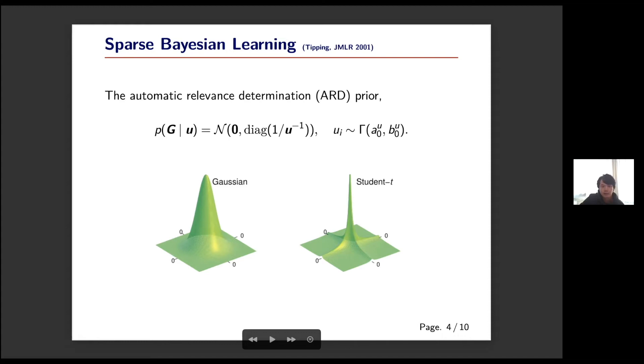In this paper we propose to use sparse Bayesian learning techniques to automatically infer the tensor ring ranks. We use the popular ARD prior, which is a hierarchical structure of distributions. It assumes that the vector follows a Gaussian distribution and the covariance matrix is diagonal, with entries following an inverse gamma distribution. It was shown that the ARD prior is equivalent to a student T distribution.